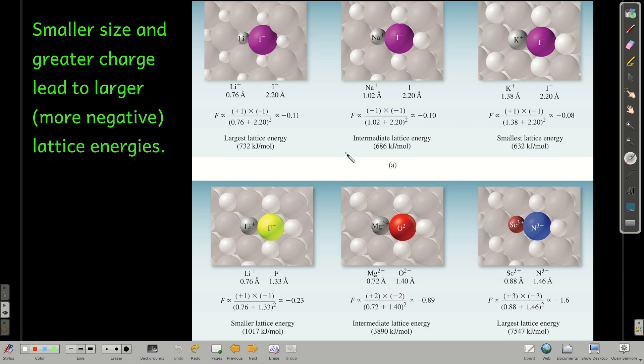So the kind of questions that you're typically asked about this, you're given three or four different ionic compounds, and you're asked to arrange them in order of increasing lattice energy or maybe decreasing lattice energy. And that's how you look at size and charge.